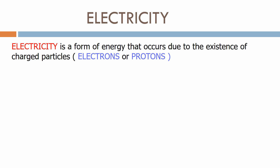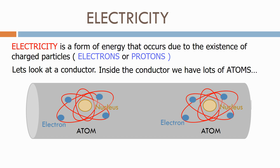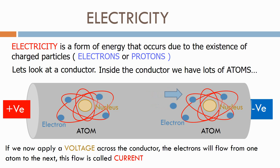Electricity is a form of energy that occurs due to the existence of charged particles, either electrons or protons. Inside the conductor we have lots of atoms, either copper or aluminium atoms. If we now apply voltage across the conductor, the electrons will flow from one atom to the next. This flow is called current, and it will continue as long as the voltage potential difference is there.